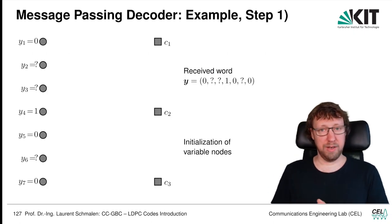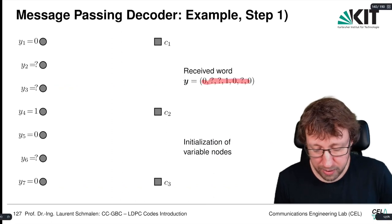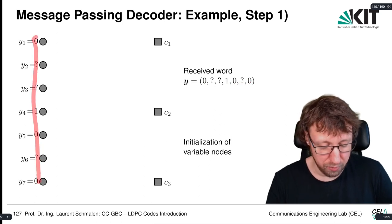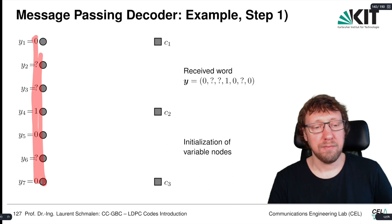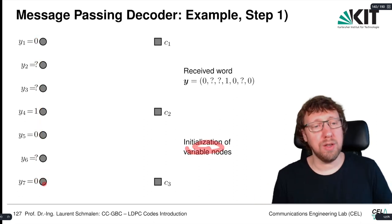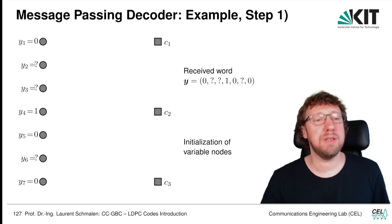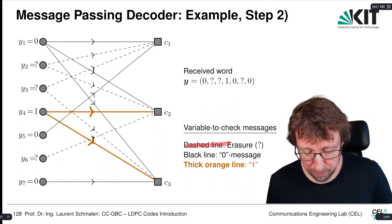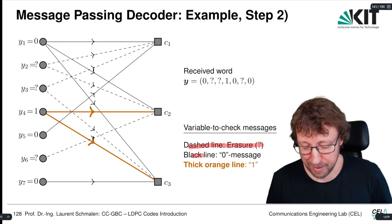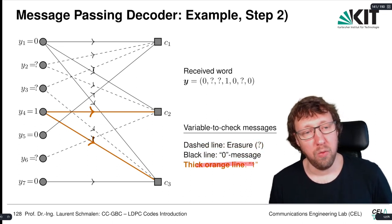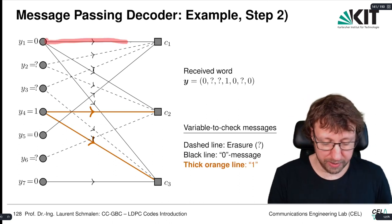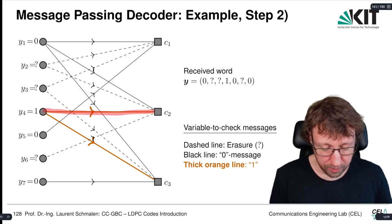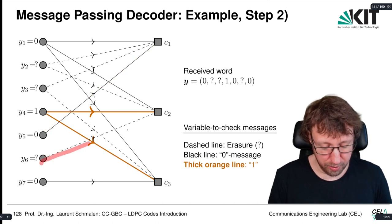Let's take a look at an example. We have received the following word: 0, ?, ?, 1, 0, ?, 0. We put the received values in the variable nodes and initialize them. Now we broadcast the values of the variable nodes to the check nodes. The legend: a dashed line means an erasure, a black line means a zero, and a thick orange line means a one. So we broadcast zeros, erasures, and ones accordingly.